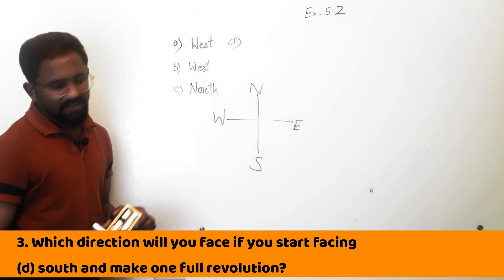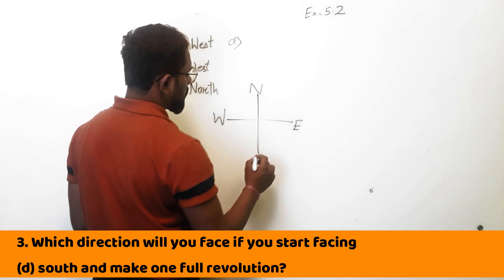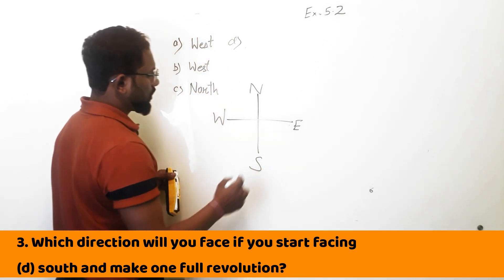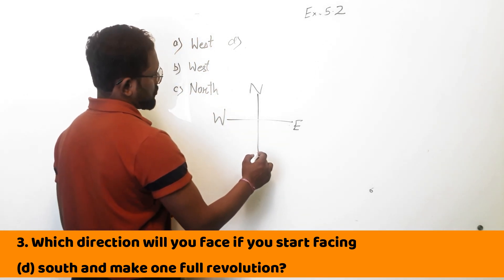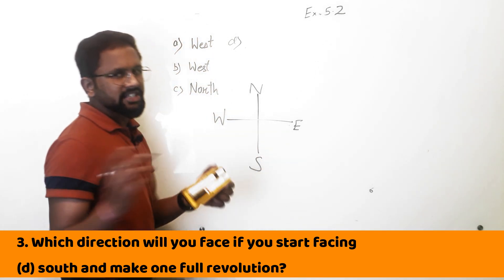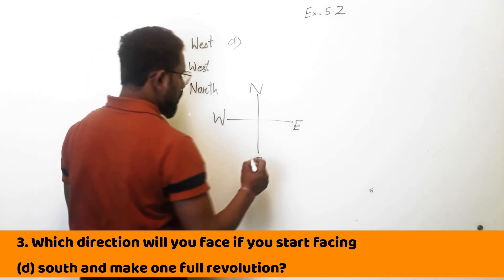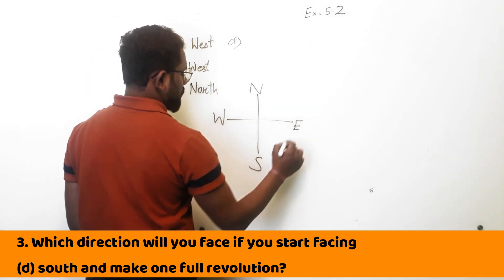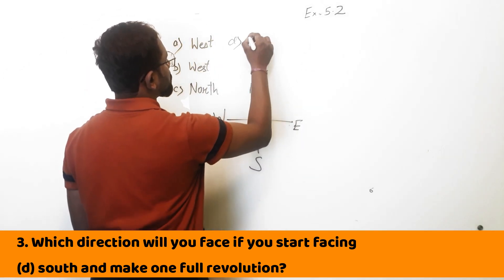South and making one full revolution — either clockwise or anti-clockwise. You are at south and making one full revolution, so you will be coming back at south.